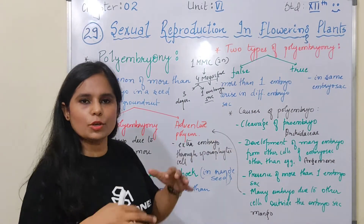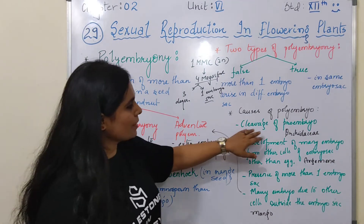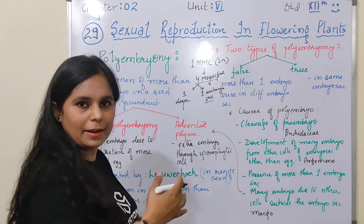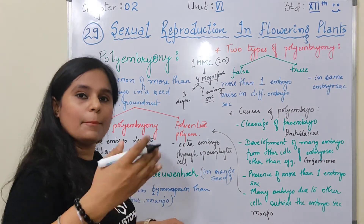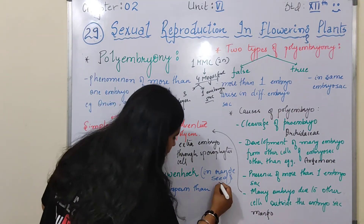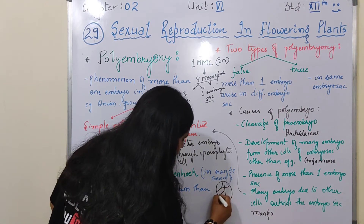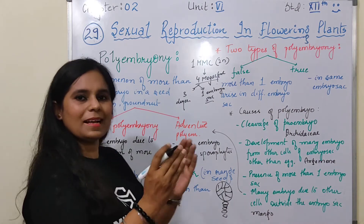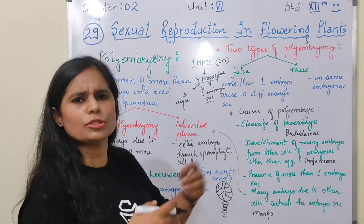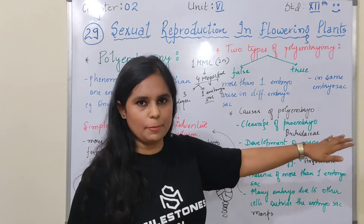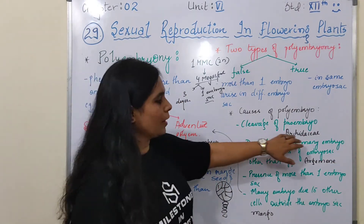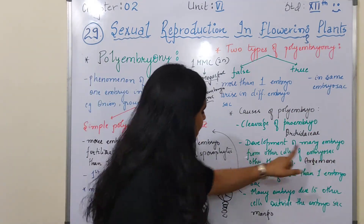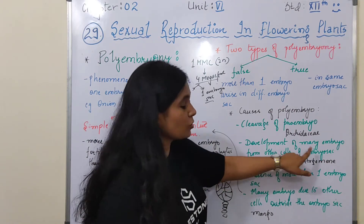Now, what are the causes of polyembryony? The first cause is cleavage of the pro-embryo. As I explained during dicot embryo development, there is a pro-embryo with a suspensor below it. If cleavage occurs in the pro-embryo, one pro-embryo can become two or three, causing polyembryony. This occurs in the orchid family.